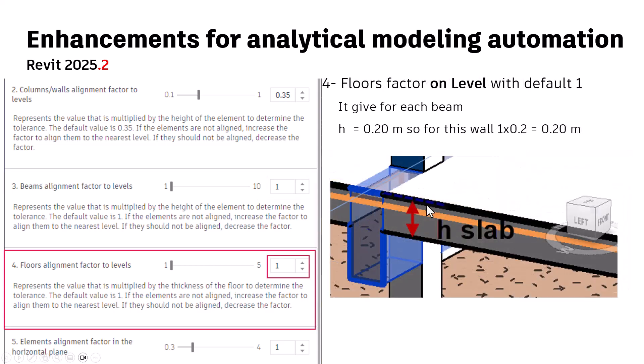The same applies for floors. You have, for example, 20 centimeters for a slab, and if you select 1 by default, it will be 1 multiplied by 0.2. So if you have some floors very close but want to align them all for analysis, you can increase this value.